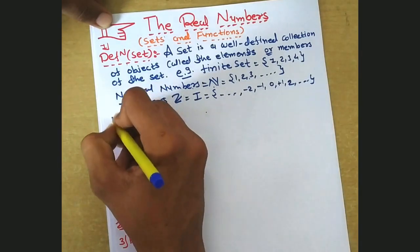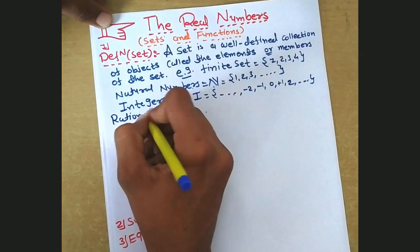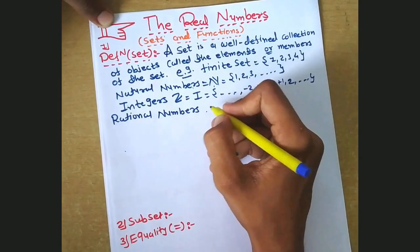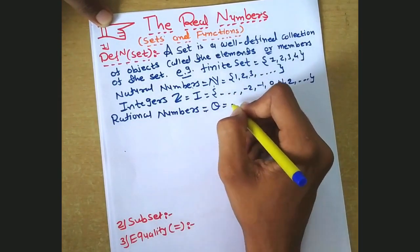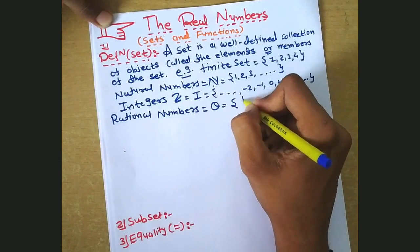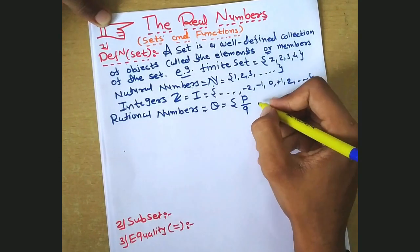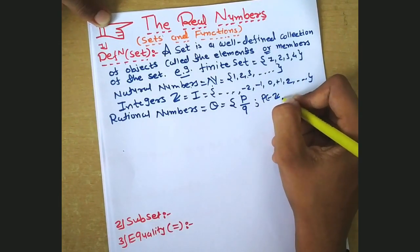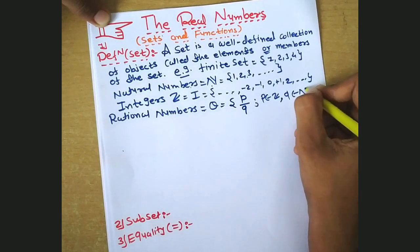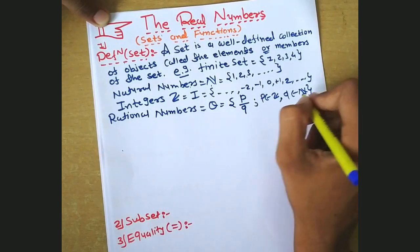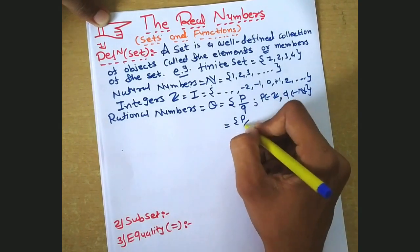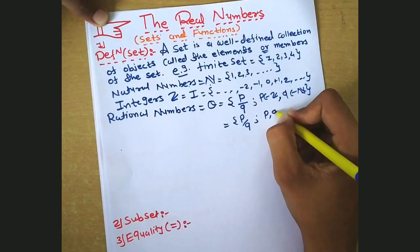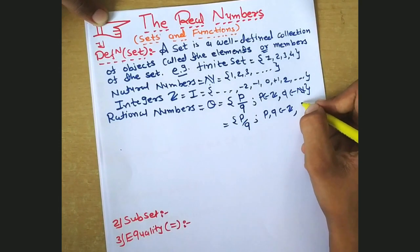Next, rational numbers. The set of rational numbers is denoted by Q, where Q means quotient. It is defined as p over q, where p belongs to Z and q belongs to N. Alternatively, we can write it as p over q where p and q both belong to Z and q is not equal to 0.